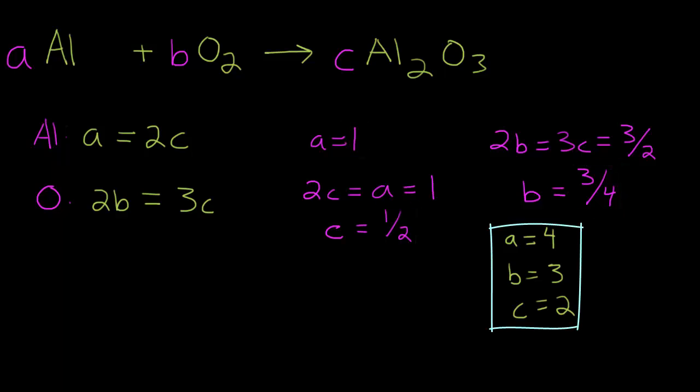So let's plug everything back into our original chemical equation and see if it makes sense. So A is 4, so we have 4Al plus B is 3, so we have 3O2, which reacts to form C. C is equal to 2, so we have 2Al2O3.